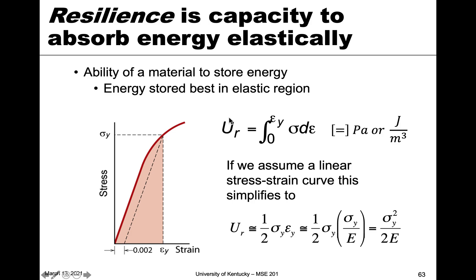The resilience, the U_r term, is the integral from zero to the yield strain with respect to stress and strain. The integral gives you the area underneath the curve. Because the units are stress times unitless strain, it still ends up being pascals or megapascals. If you look at the pascal unit, you can rearrange it and that's the same as joules per volume — energy units per volume. So a pascal equals joules per volume, and the area underneath the curve is defined as that energy.